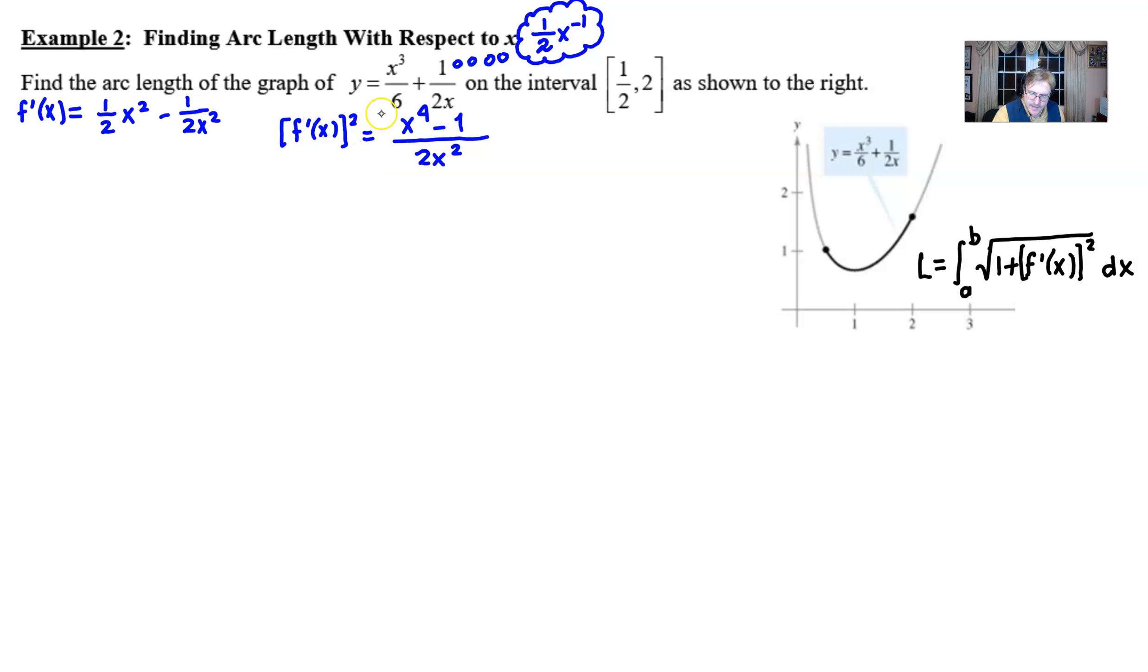And then of course we still have the minus one all of this must be squared. It's a little bit easier to pull off because we can expand the x to the fourth minus one times itself and that would give us x to the eighth minus 2x to the fourth plus one and then if we square what's on the bottom that's 4x to the fourth.